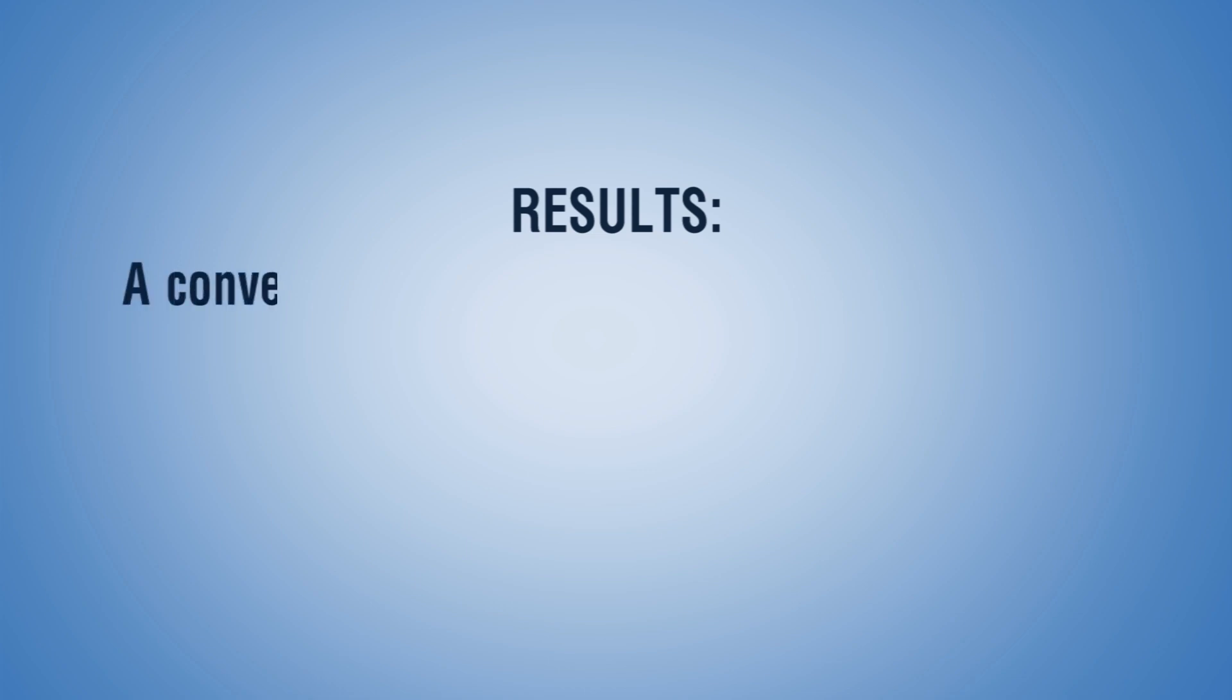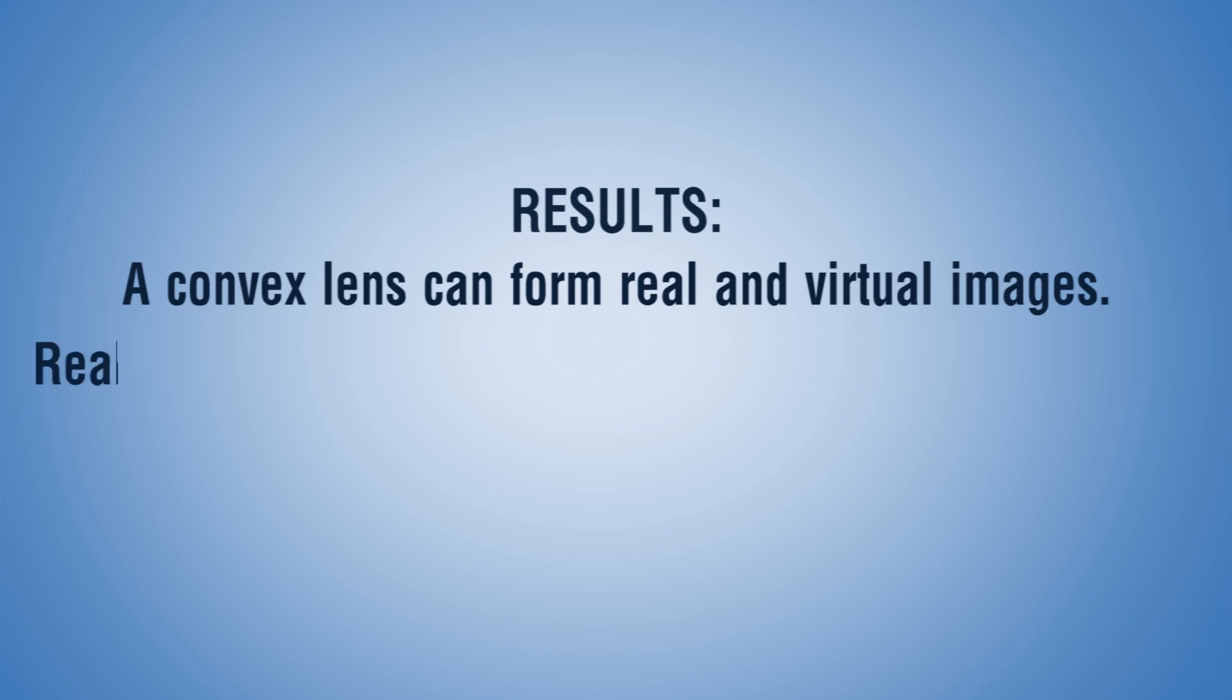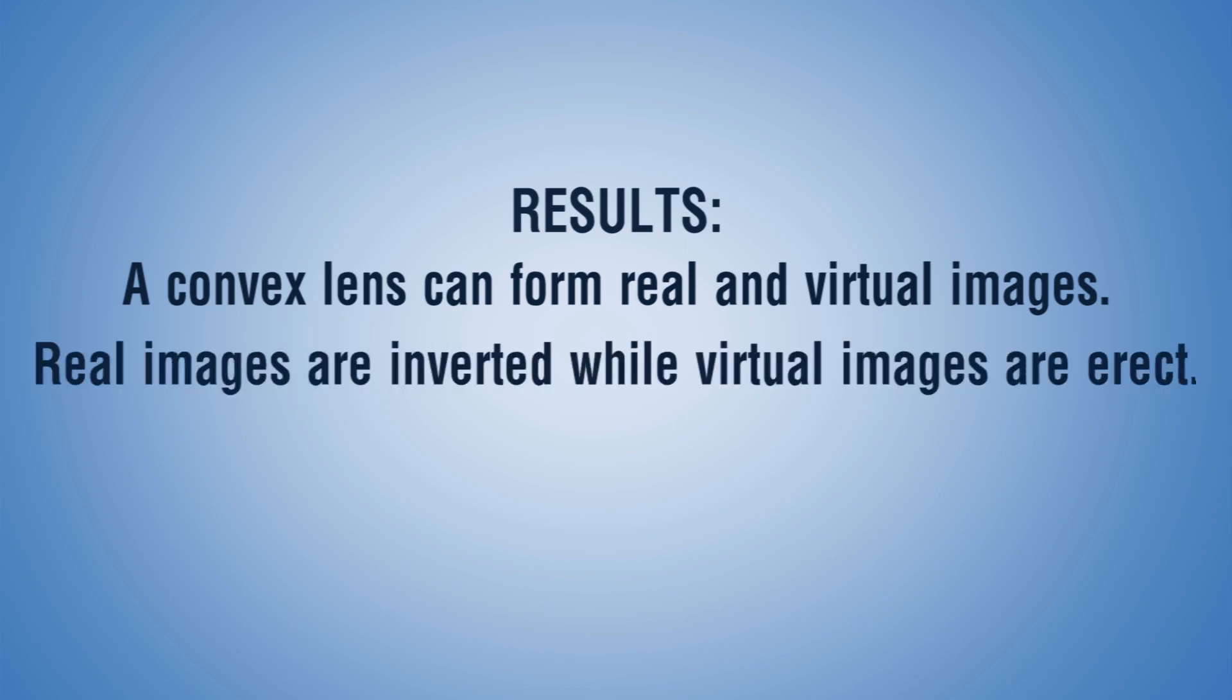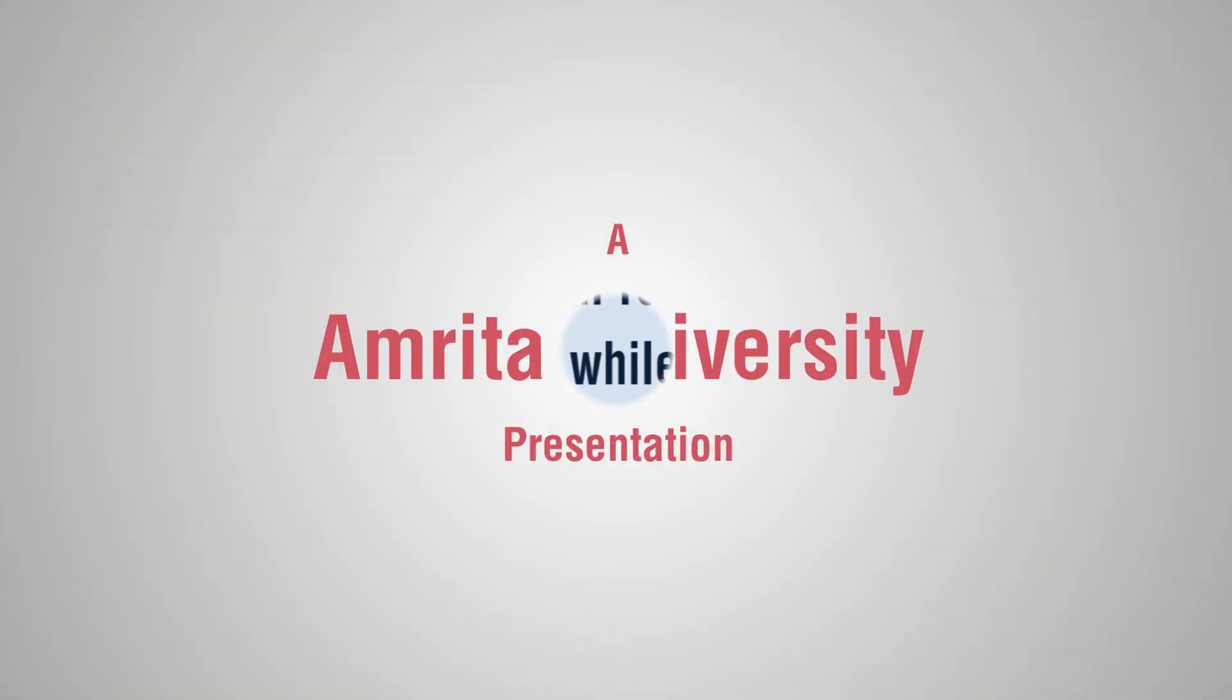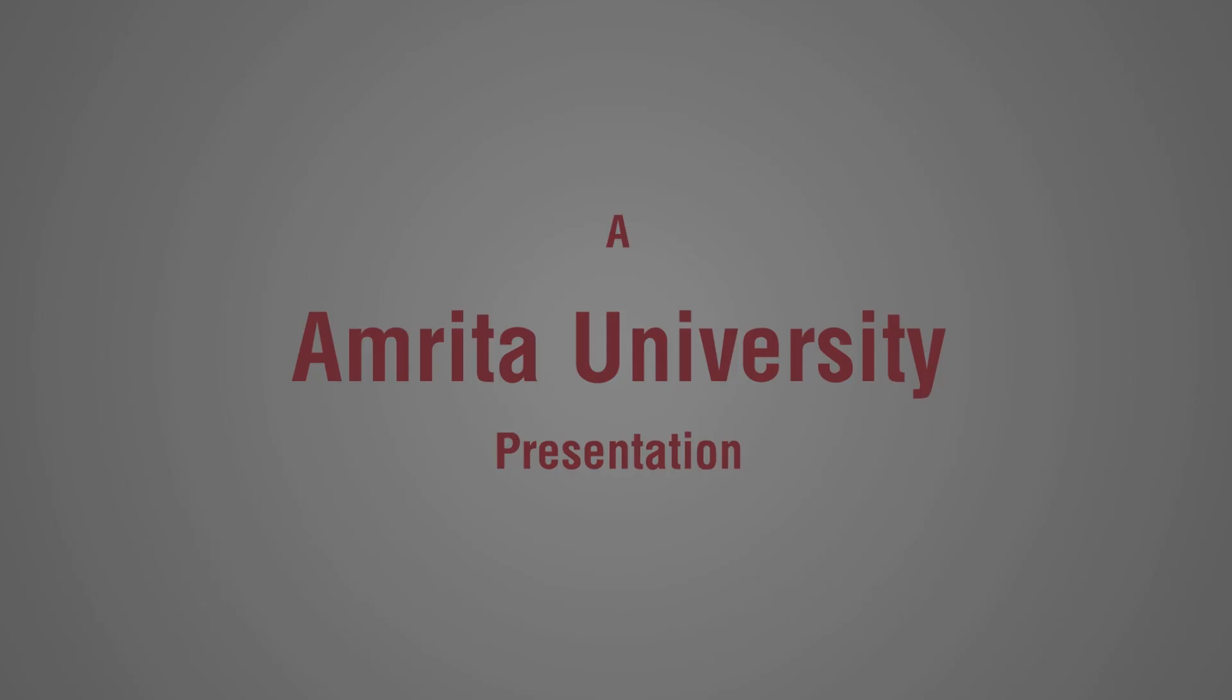A convex lens can form real and virtual images. Real images are inverted, while virtual images are erect. Based on the position of the object, the image formed can be diminished, enlarged, or of the same size.